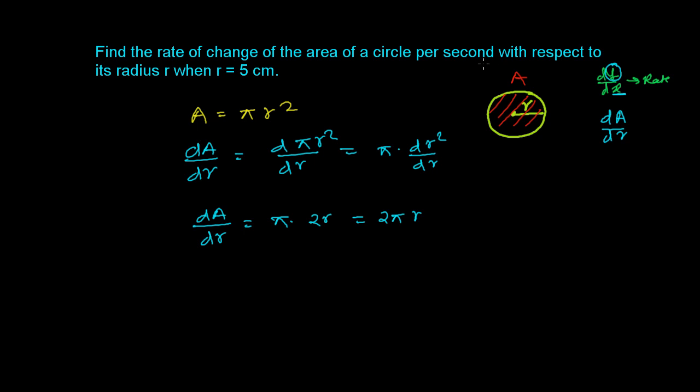Now the question is saying, what is the rate of change of this area with respect to radius when the radius is 5 cm? So I need to find out now dA over dr when the radius is going to be 5 cm. So dA over dr at r equals 5 cm is going to be 2π times the radius. The radius is here 5. So it's going to be 10π.